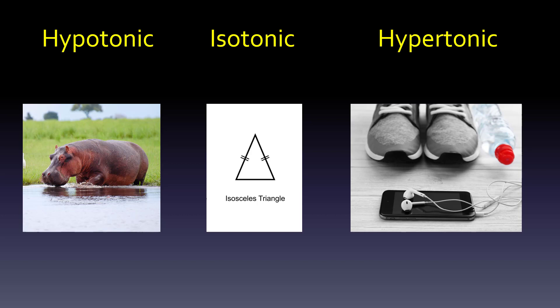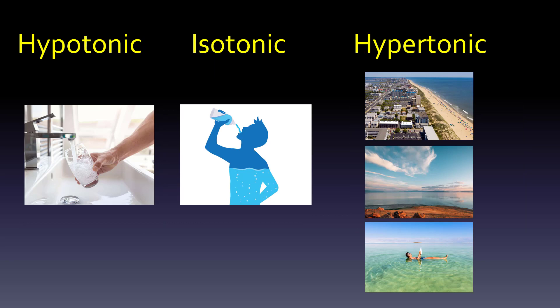Here's something more tangible: tap water has very little solute, so it's hypotonic to your body. You yourself are isotonic. The ocean is a lot like 3% saline. The Great Salt Lake has even more salinity than the ocean. And the Dead Sea is about a third sodium chloride — there's so much salt that you can actually float in it.